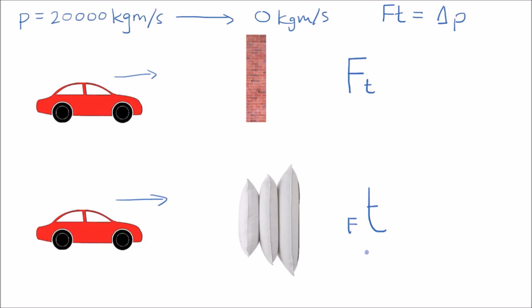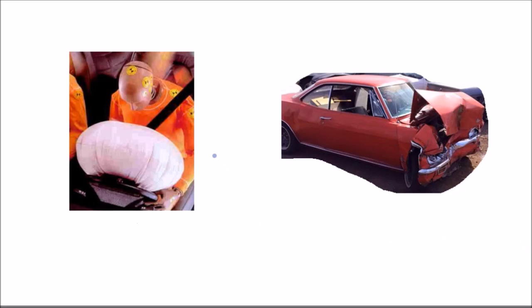Car safety features such as airbags and crumple zones are all designed to increase the impact time, therefore reducing impact forces. And it's also why cyclists wear helmets and why gymnasts train on mats.